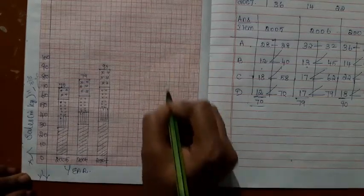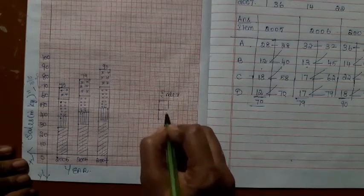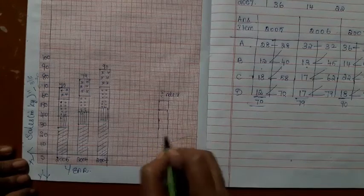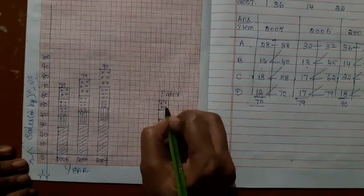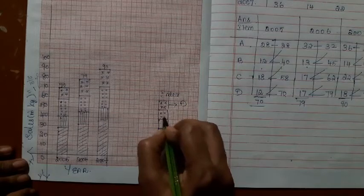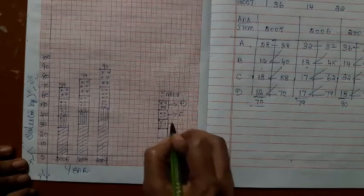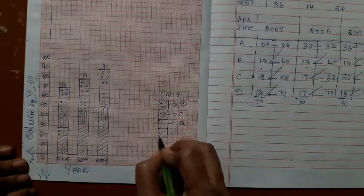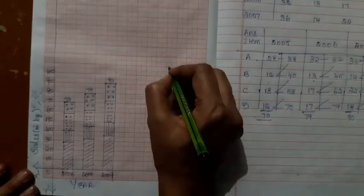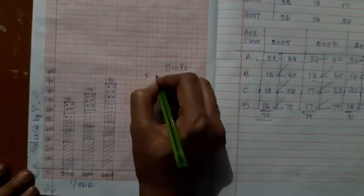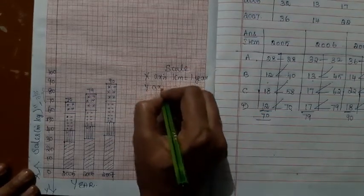Right, now let us have an index which explains these shades. The star represents what? The sales of the component D. The dots represents what? The sales of the component C. And this represents the sales of the component B. The sales of the item A. The index is over. Now you should write this scale: x-axis 1 centimeter equal to 1 year, y-axis 1 centimeter equal to 10 units.